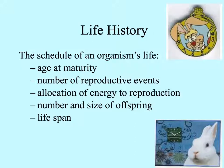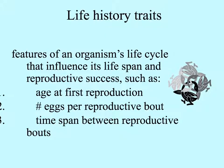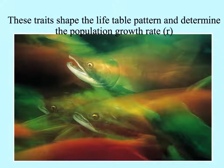These illustrations of the March Hare are here because the March Hare in Alice in Wonderland was always in a hurry. Life history traits are features of an organism's life cycle that influence its lifespan and reproductive success, such as age at first reproduction, the number of offspring per reproductive episode, and how much time passes between those reproductive episodes. For any organism, those traits shape the pattern of its life table and determine its population growth rate, little r.